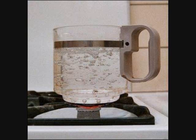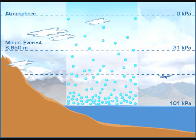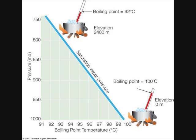Therefore, at sea level, a substance will boil when the vapor pressure is 760 mmHg. Though at higher elevations with less atmospheric pressure, less vapor pressure is required to reach boiling. This is why water boils at lower temperatures at higher elevations.